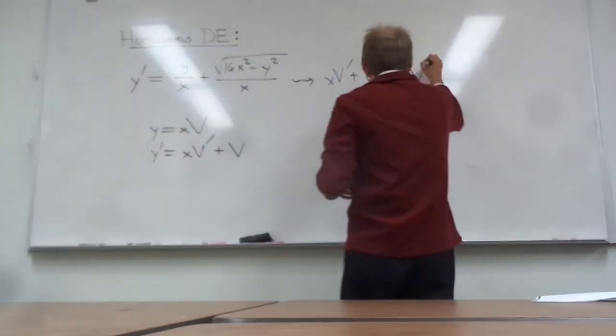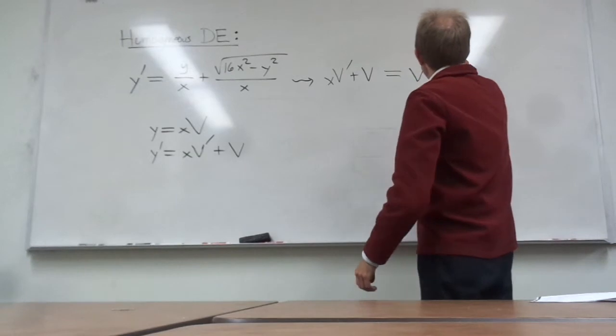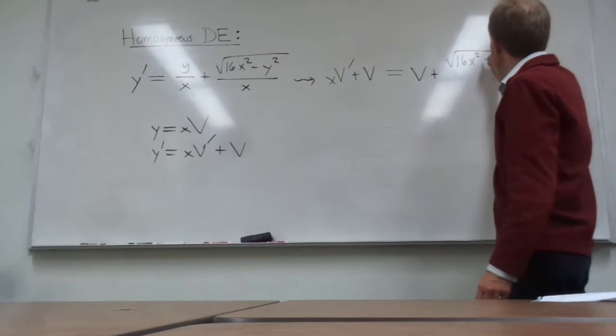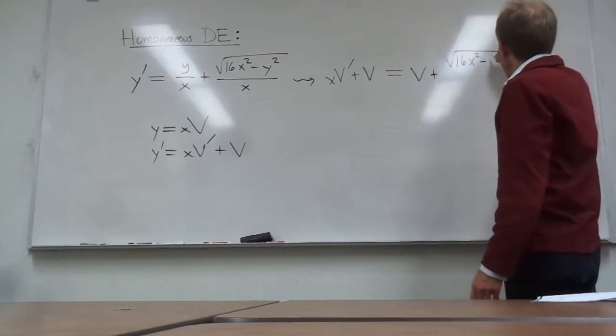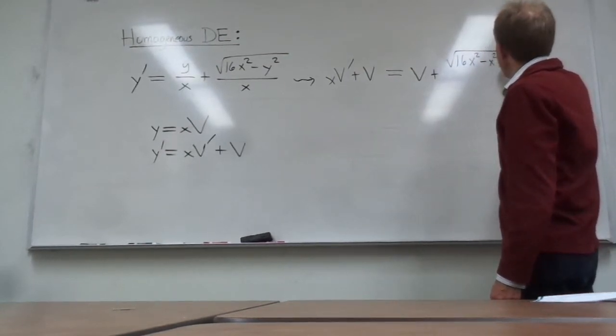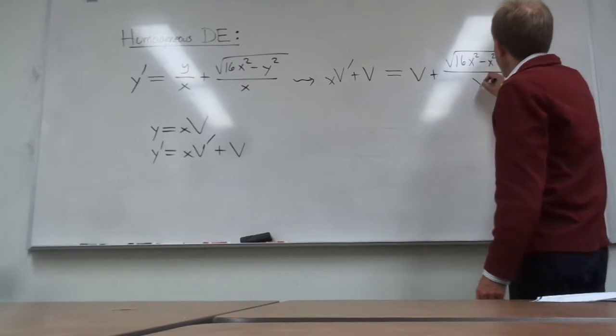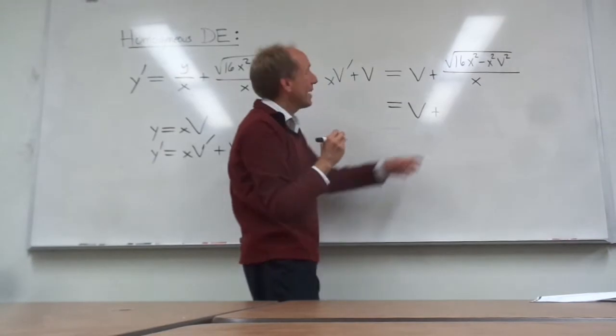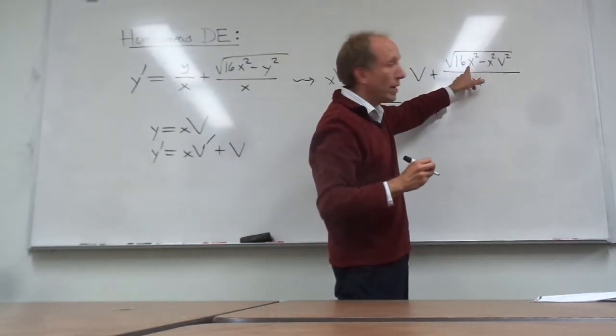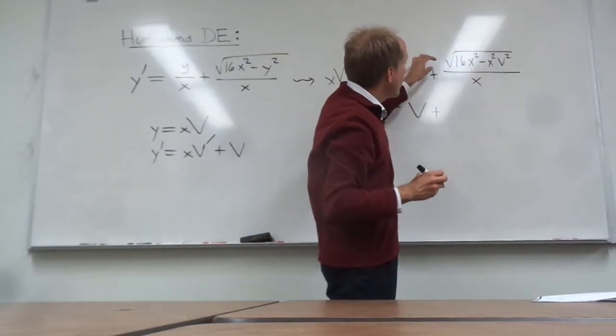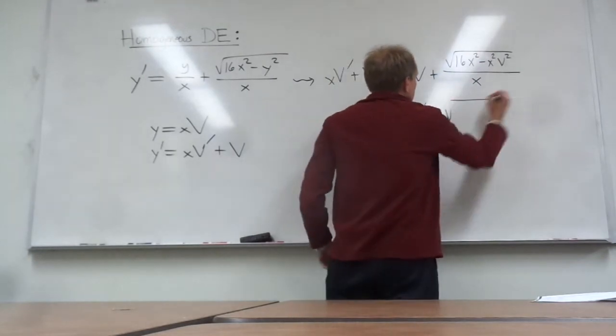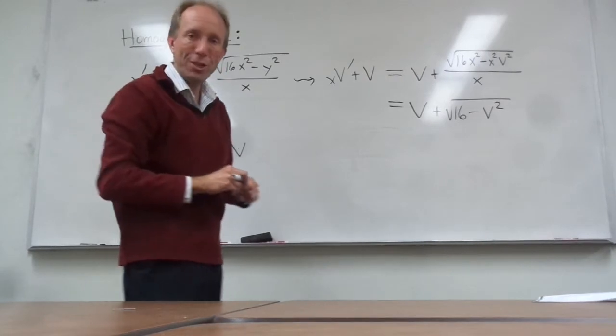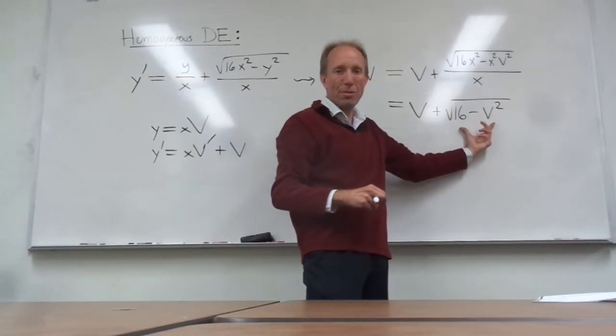And then the second term is a little more complicated. I have the square root of 16x squared minus, well, y squared is going to become x squared v squared, all of that over x. And we can actually simplify the right side a little bit more. Again, I can factor the x squared, pull it outside of the radical, and cancel it with the denominator. If I do that little algebraic manipulation, I'm just going to get this expression right here.